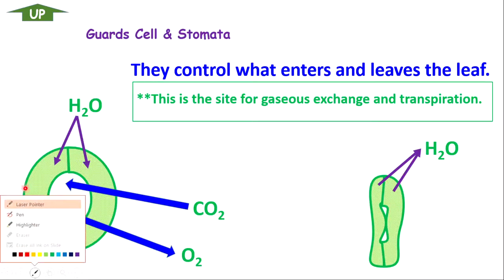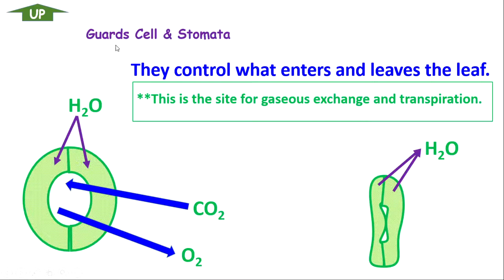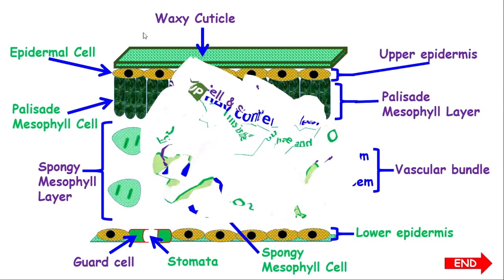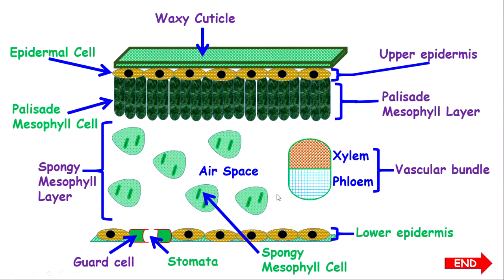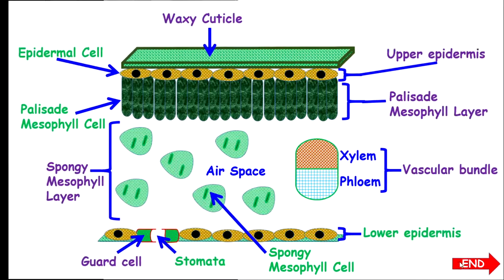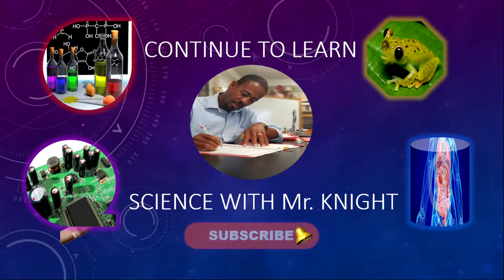So now we're going to take one last look at our leaf structure — this is the entire leaf, the internal parts. Remember, a leaf is very thin, but yet so powerful and is needed to provide energy and food for organisms within an ecosystem. So now we're at the end of the lesson. Keep watching and subscribe to see upcoming lessons. See you in the next lesson.